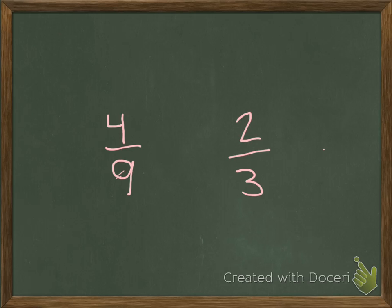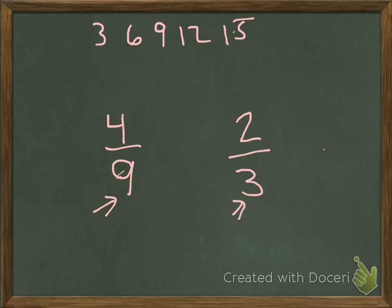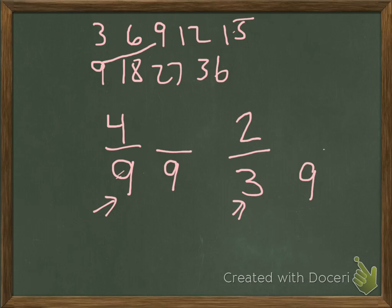Now let's look at these two fractions: we have four-ninths and two-thirds. We want to find a common denominator for 9 and 3. A common denominator is the same as a common multiple — we use that common multiple of the denominators to make equivalent fractions. Writing multiples of 3 and multiples of 9, we can see that 9 is a common multiple. In fact, 9 is the least common multiple of the two, so we'll use 9 as our common denominator.